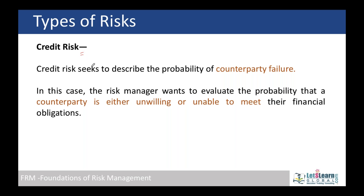If a company does not maintain enough funds to meet its requirements — that is, if it faces liquidity risk — then for the other company it becomes a credit risk. For example, Company A sells goods to Company B with three months credit. If Company B is already facing liquidity risk, when Company A requests payment, Company B may become insolvent and unable to pay. So Company A is facing credit risk.